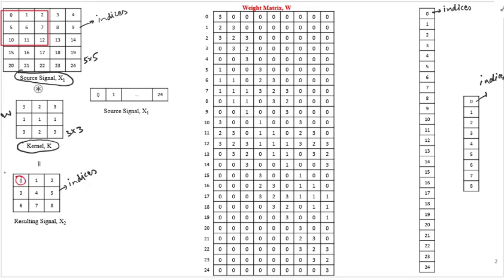As discussed in the last video, the kernel is placed on the source signal and the dot product in the overlapping region is stored in x2, which is the resulting signal. For each location in x2, the dot product between the kernel and the overlapping area in the source signal is computed. As x2 has 3 by 3 dimensions, this process is repeated 9 times.